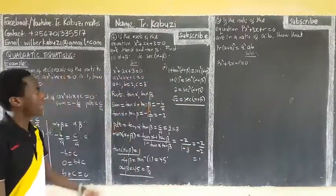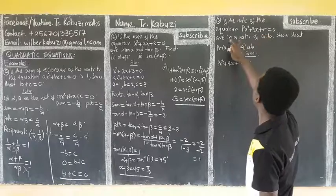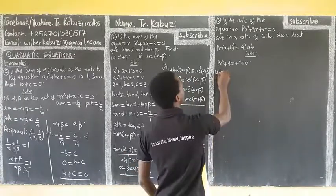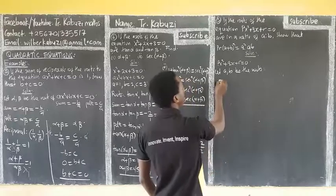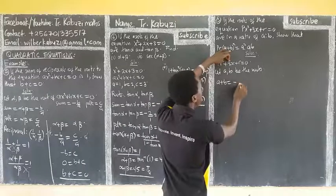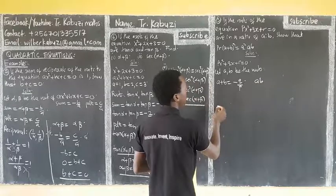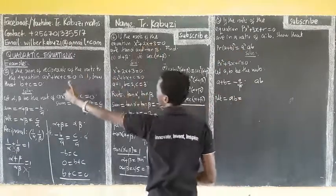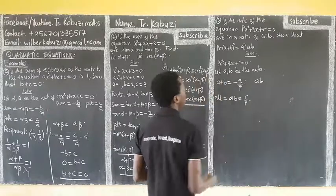Now the next problem: if the roots of the equation are in the ratio a to b, we let a and b be the roots. Using Vieta's formulas and comparing with the general equation, their sum a plus b equals negative p over one, which is negative p, and their product a times b equals r over one, which is r.